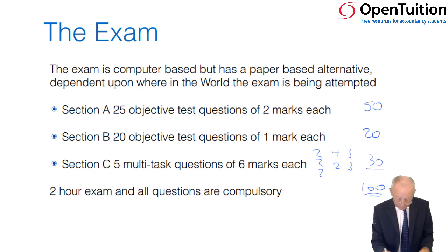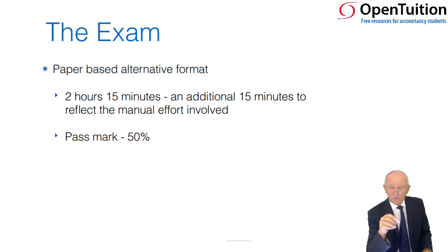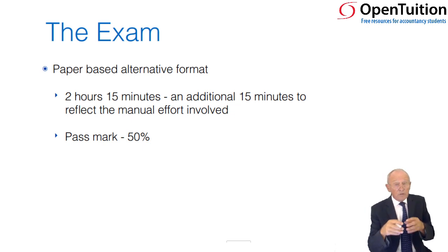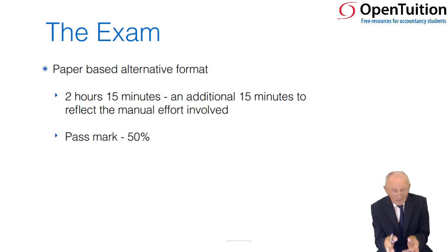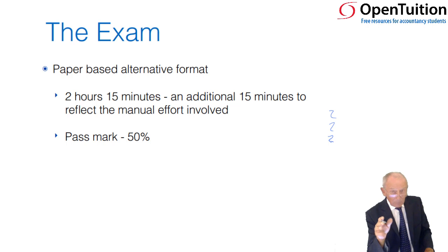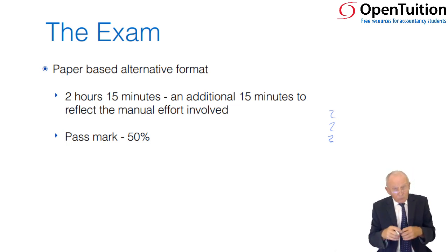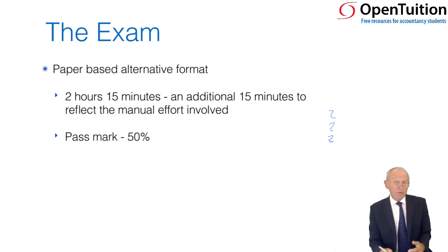In the paper-based exam, section A and section B are exactly the same — word for word. In section C, there's a slight variation because it's no longer on computer, so you have to write your answers. It's still a two-two-two, four-two, or three-three split, but you handwrite your answers. In the paper-based exam, there is an additional 15 minutes available to compensate for the manual effort involved in writing out answers.